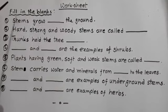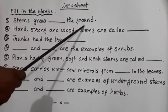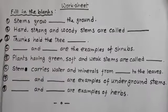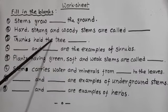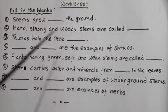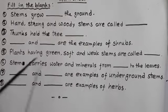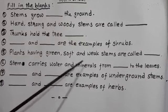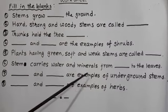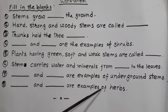Here is a worksheet for you. Fill in the blanks. Number one: stems grow dash the ground. Two: hard, strong and woody stems are called dash. Three: trunks hold the tree dash. Four: dash and dash are examples of shrubs. Five: plants having green, soft and weak stems are called dash. Six: stem carries water and minerals from dash to the leaves. Seven: dash and dash are examples of underground stems. Eight: dash and dash are examples of herbs.